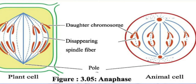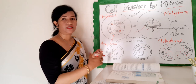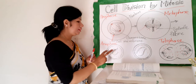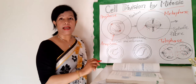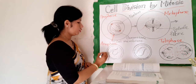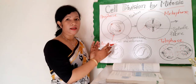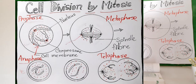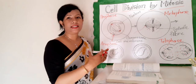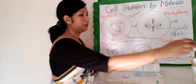In anaphase, chromatids move to opposite poles, pulled first at the centromere by the microtubules. Two daughter cells are produced, which are exact copies of the parent cell. In scientific terms, they are genetically identical to the parent cells.